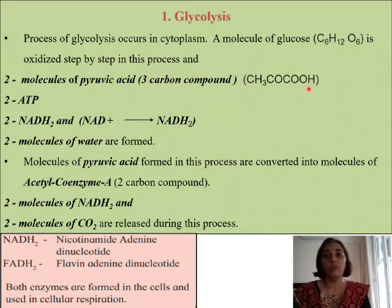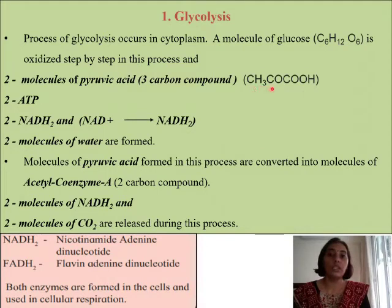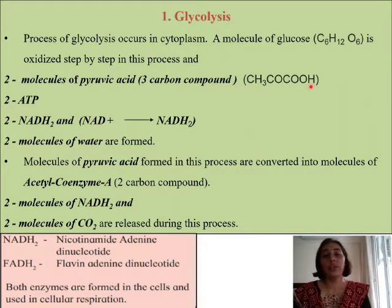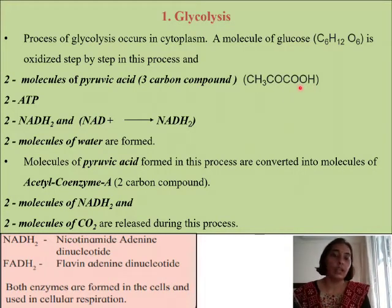This is the formula of pyruvic acid, just for your information — you need not learn this. It is CH3COCOOH. The functional group is COOH, which is a carboxylic acid group, and it is going to be an organic acid. Pyruvic acid is an organic acid.